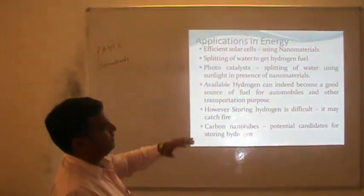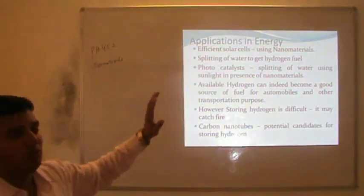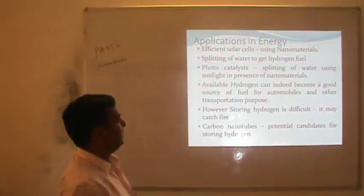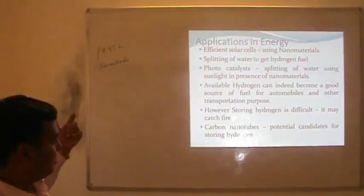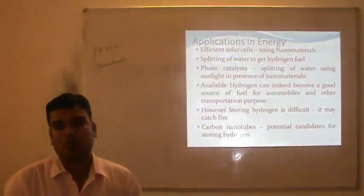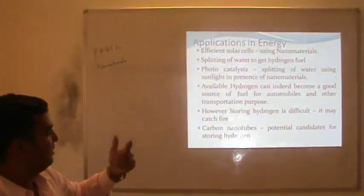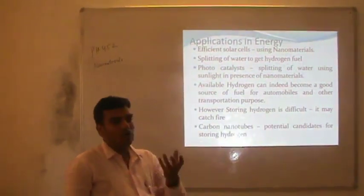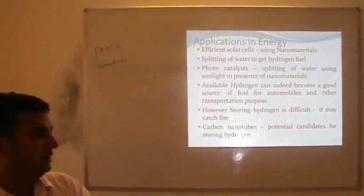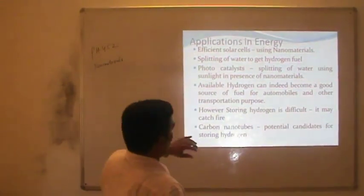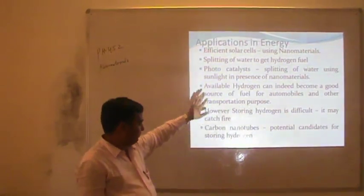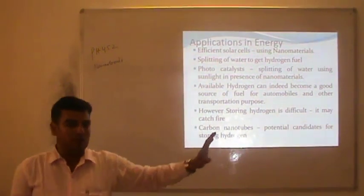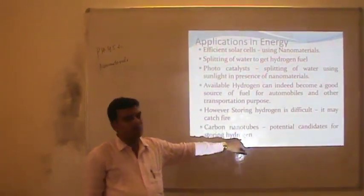Photocatalysts are used to split water in the presence of some nanomaterials, and the photocatalysts used are basically nanomaterials. Available hydrogen can indeed become a good source of fuel for automobiles and other transportation. If the storage problem for hydrogen is solved, then it is the best fuel for transportation. However, storing hydrogen is difficult — hydrogen is stored at very high pressure, and when it comes out of any container, it immediately oxidizes and burns. This is the biggest trouble with hydrogen: it catches fire, which is very dangerous. Carbon nanotubes have the potential to store hydrogen.